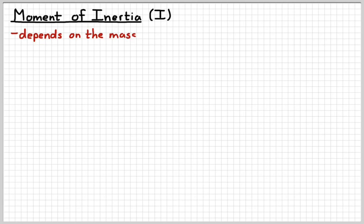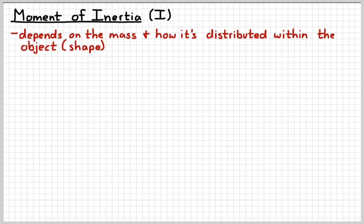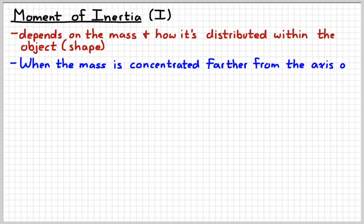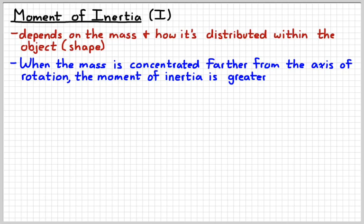So the moment of inertia depends on the mass of the object. And again, it also depends on how it's distributed within the object. Basically, you can say it depends on the shape of the object. The more mass that is concentrated farther away from the center or the axis rather of rotation, then the bigger the moment of inertia is going to be.